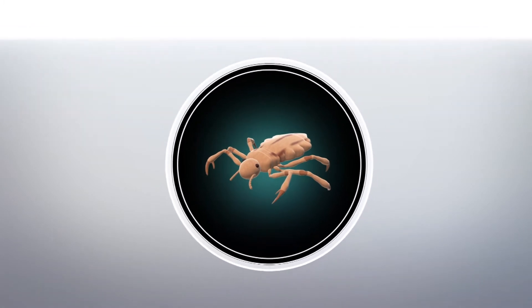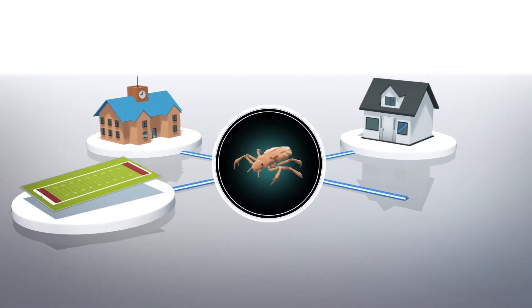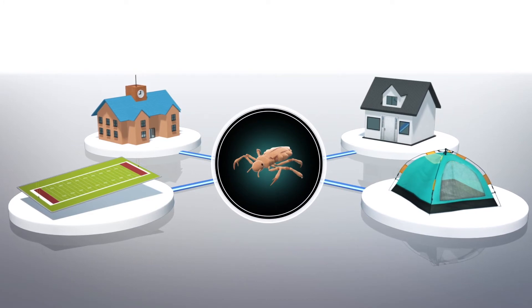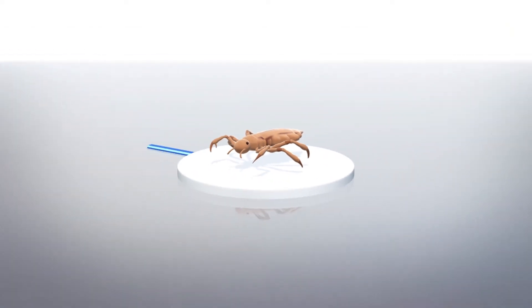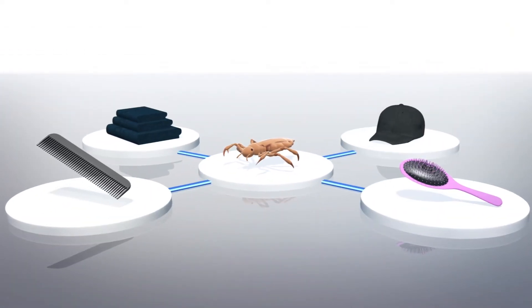The most common way to get head lice is through head-to-head contact at places like school, home, and outdoor sports or camp activities. Lice can also be spread when sharing personal care items like combs, brushes, towels, and hats.